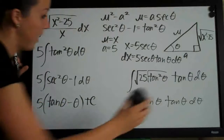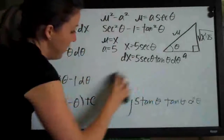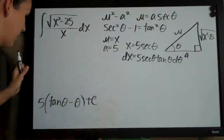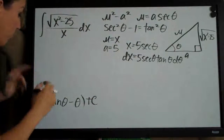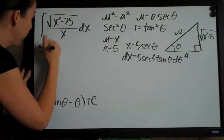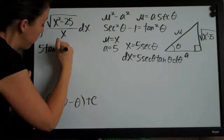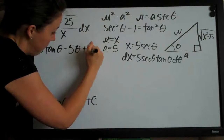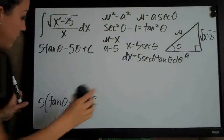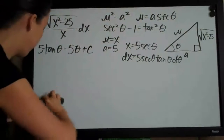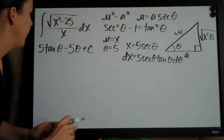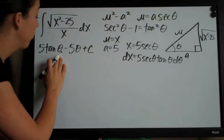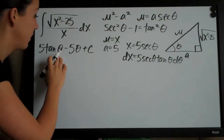Now we simplify one more time by distributing the 5, giving us 5 tangent theta minus 5 theta plus C. That's our integral fully simplified, and now we need to convert back in terms of x instead of theta.